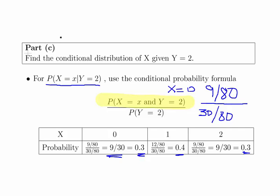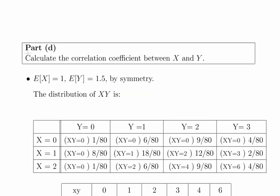This shows your working and demonstrates understanding of the conditional probability formula, which is important. Now, to calculate the correlation coefficient, we typically need the expected value of X and the expected value of Y. In this case, the expected value of X is equal to 1 and the expected value of Y is equal to 1.5.